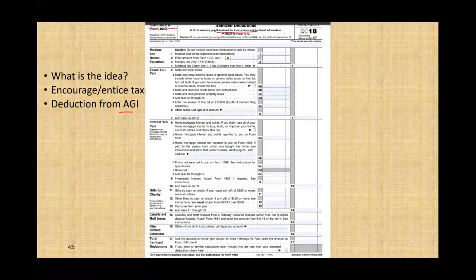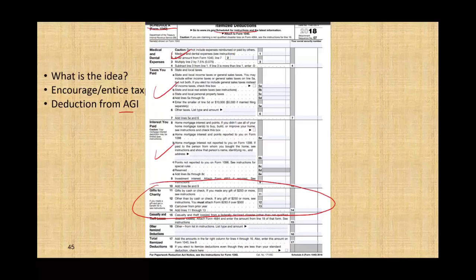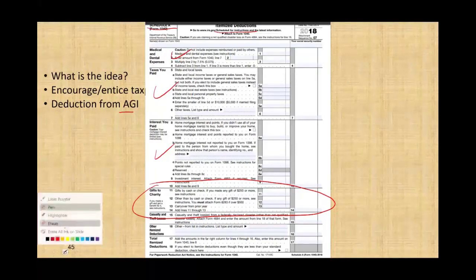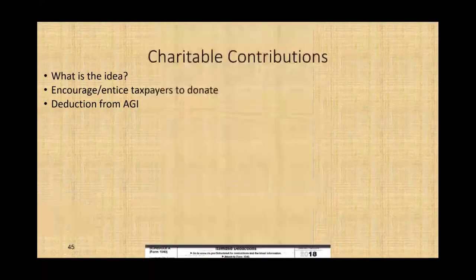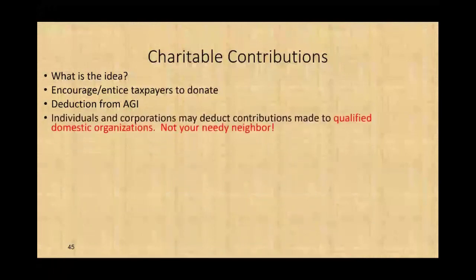We already dealt with medical and dental expenses, taxes, and interest. Now we're going to be dealing with gifts to charities. You can add your gifts to charitable contribution to your itemized deduction, and hopefully your itemized deduction will be greater than your standard deduction — therefore you will be able to take the higher amount, which will be the itemized deductions.